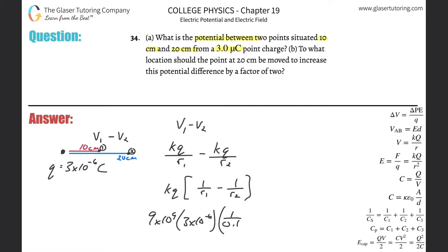Let's do it. So 9 times 10 to the 9th multiplied by 3 times 10 to the minus 6th, multiply them by the difference between one divided by 0.1 minus one divided by 0.2.